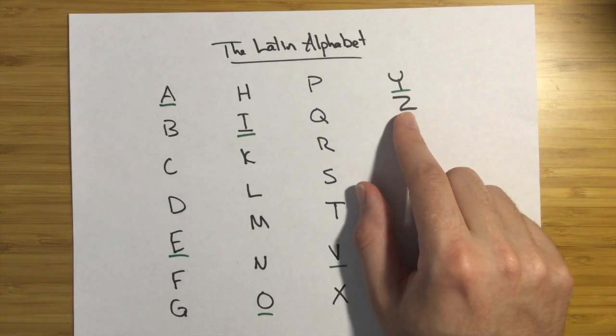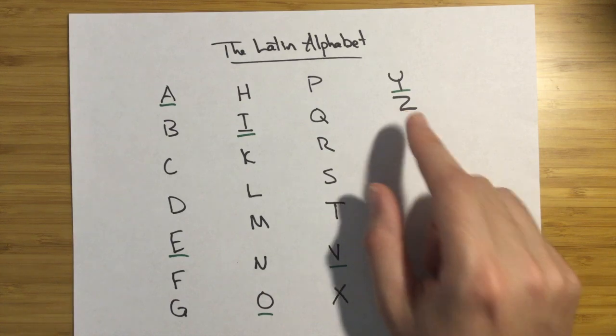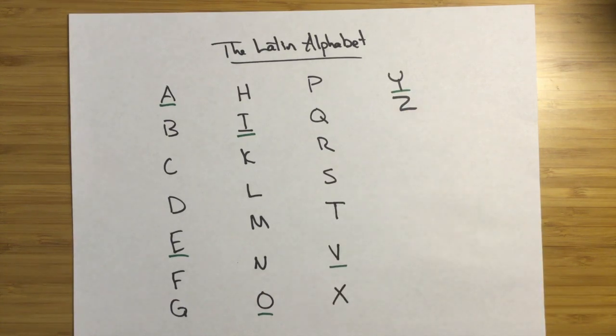And then Z makes a Z sound. And this was used a lot for loan words from Greek also. So that makes things a little bit simpler. Wheelock's Latin will throw in some additional tips.